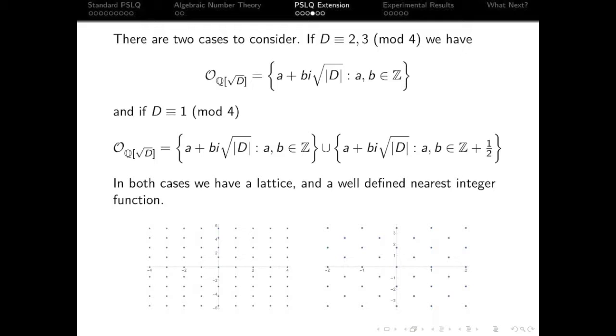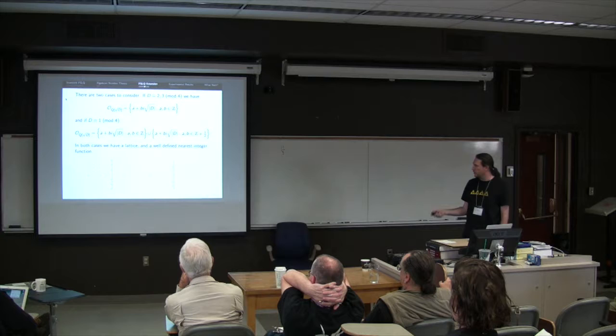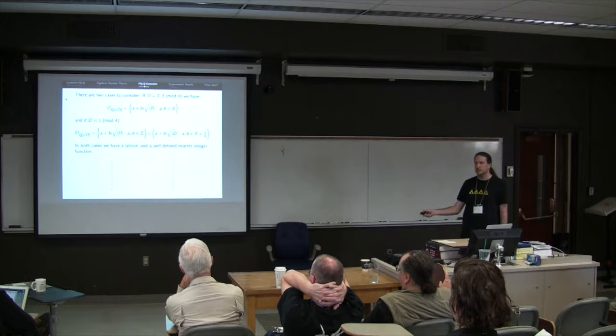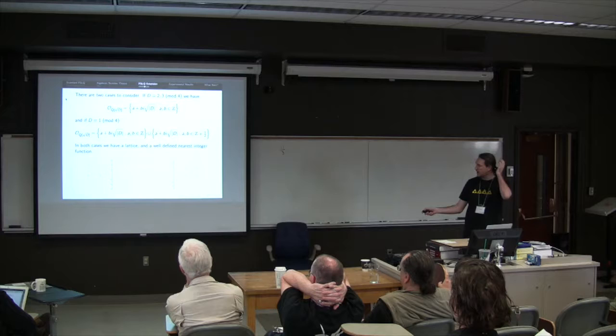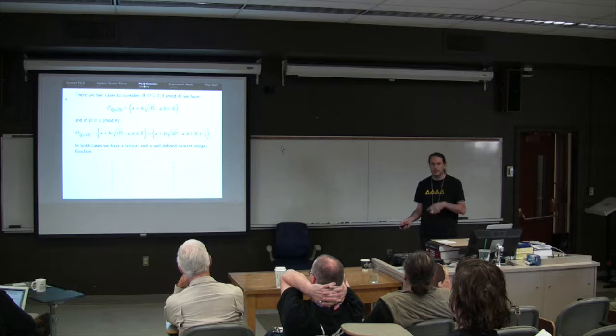So there's two cases to consider. This being that D is 2 and 3 mod 4, in which case these are our algebraic integers, and D equals 1 mod 4, in which case these are our algebraic integers. This is just the expansion of the omega notation I had in the other slide. In both cases, we've got a nice lattice where we've got a well-defined nearest integer function. So the lattice for the two or three cases, basically just a square like this, and the lattice for our case for the half integers looks like this one. The point is, it's a lattice. We can talk about nearest integer without ambiguity. It doesn't matter that there's a couple to pick from. We've got a nicely defined point.